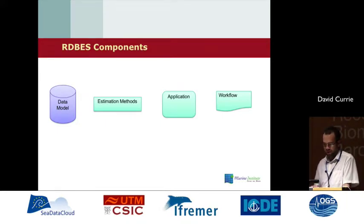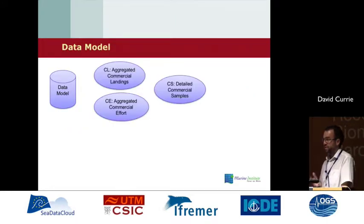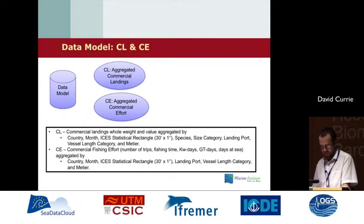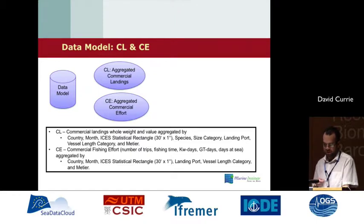I've broken it down into four real components of the RDB-ES: the data model, the estimation methods, the application itself, and the workflow. Most work so far has been on the data model. It consists of three parts: CL, which is aggregated commercial landings; CE, which is aggregated commercial effort; and CS, which is the detailed biological samples of commercial fisheries. CL and CE are used straight from the existing regional database data model. CL is landings — whole weight and value aggregated by country, month, year, down to ICES statistical rectangle, species, species presentation type, and metier.